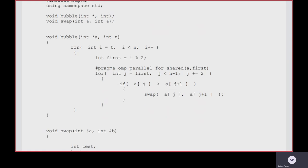Then if a[j] is greater than a[j+1], swap a[j] and a[j+1]. For that purpose you are adding a separate swap function for exchanging the contents of two memory locations or indices — those might be odd or even locations depending on the step.